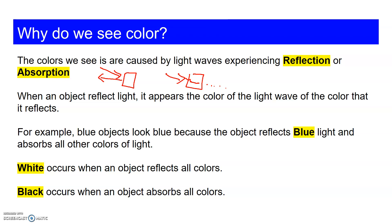So why do we see white and black objects? White objects occur because the object reflects all the colors of light and goes back into your eyes. They combine to make white. Black occurs when the object absorbs all the light and none of it goes into your eyes.